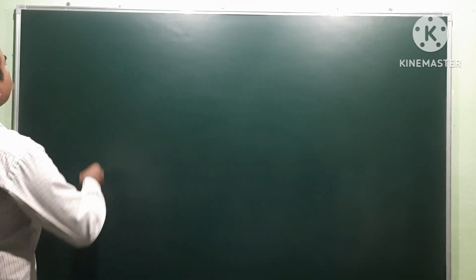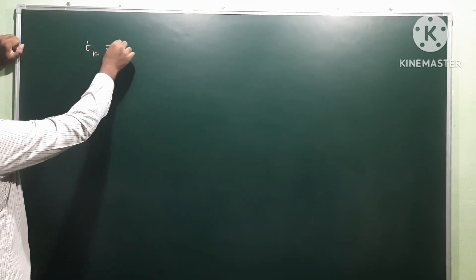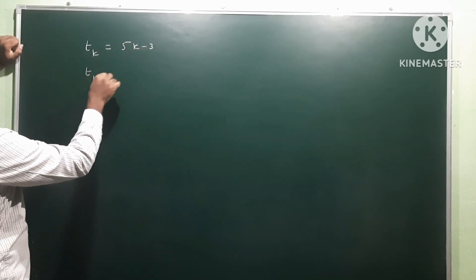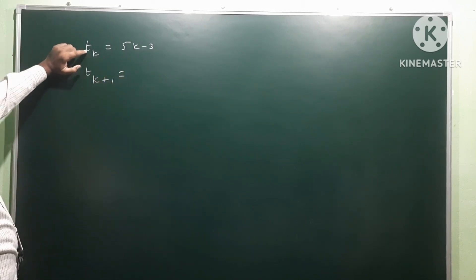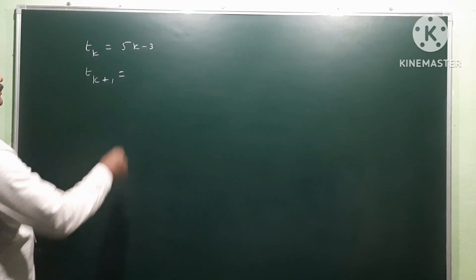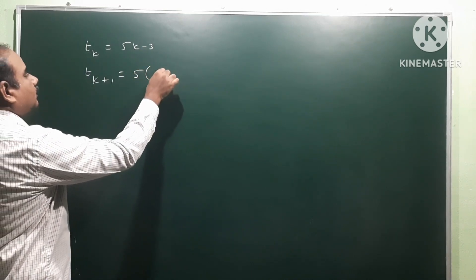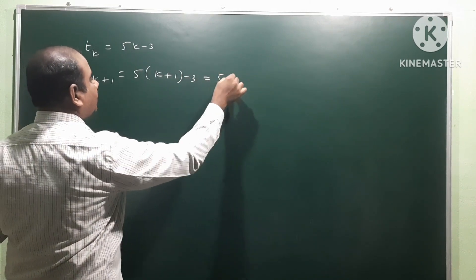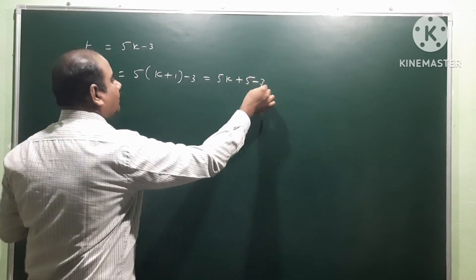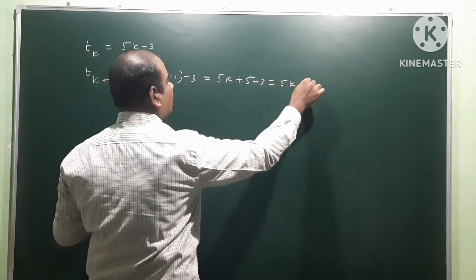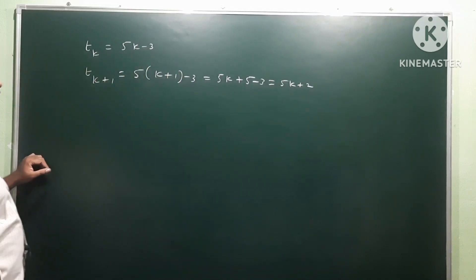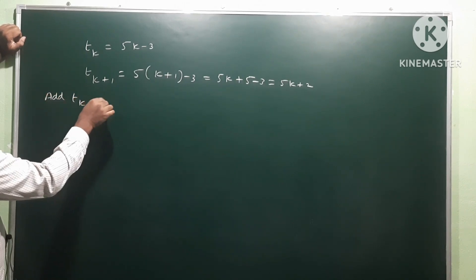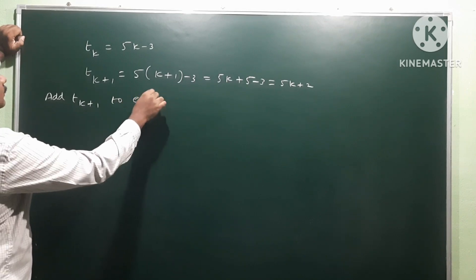Next, T_k, the kth term, is 5k minus 3. Now find T(k+1): substitute k+1 in place of k, so 5 into (k plus 1) minus 3, which equals 5k plus 5 minus 3, that is equal to 5k plus 2. Therefore 5k plus 2 is the (k+1)th term.